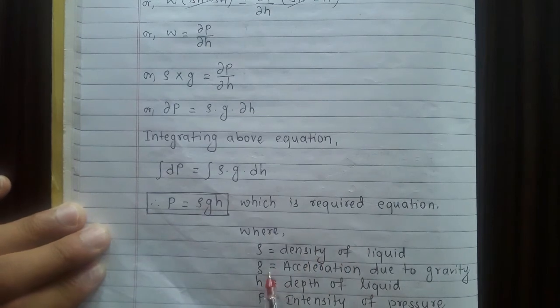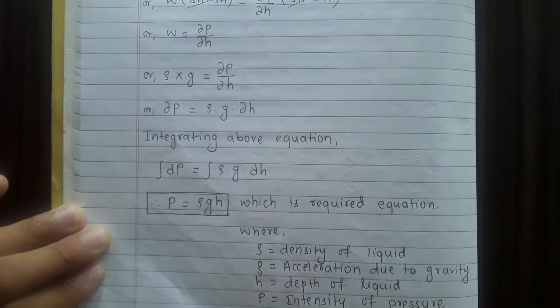Where rho means density of liquid, g means acceleration due to gravity, h means depth of liquid, and P means intensity of pressure.